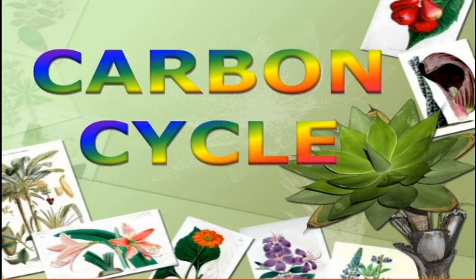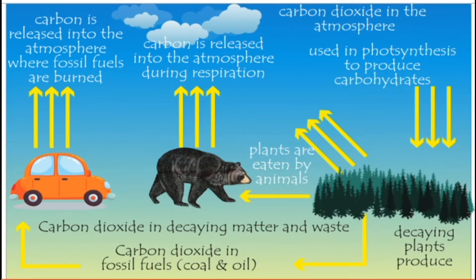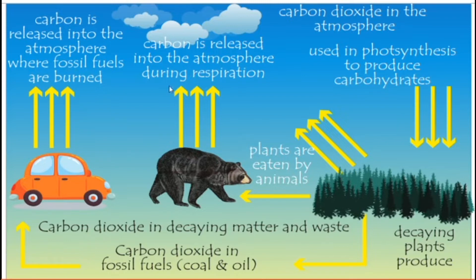This picture clearly shows how carbon moves from one stage to another. Carbon is released into the atmosphere where fossil fuels are burned. Fossil fuels include petrol, diesel, and kerosene. When we use these to run vehicles, they release carbon dioxide into the atmosphere. Carbon is also released into the atmosphere during respiration — all animals and living organisms release carbon dioxide during respiration.